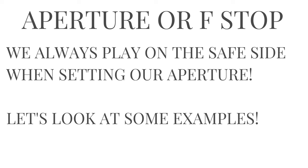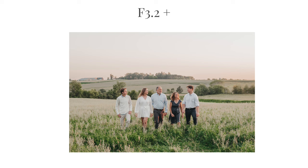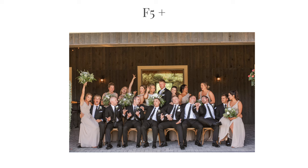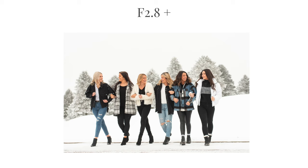When it comes to aperture or f-stop, we always like to play it safe. If we have an aperture that is too low — say a 1.8 or a 1.4 — and we're taking a photo of a large group of people, that's probably not the smartest idea. For example, with a family of five we set our aperture to a 3.2 or possibly higher. When we added more people in a wedding party with a couple of rows, we bumped the aperture up to f/5 or higher. For a group of ladies all in a straight line, we put the aperture at f/2.8.